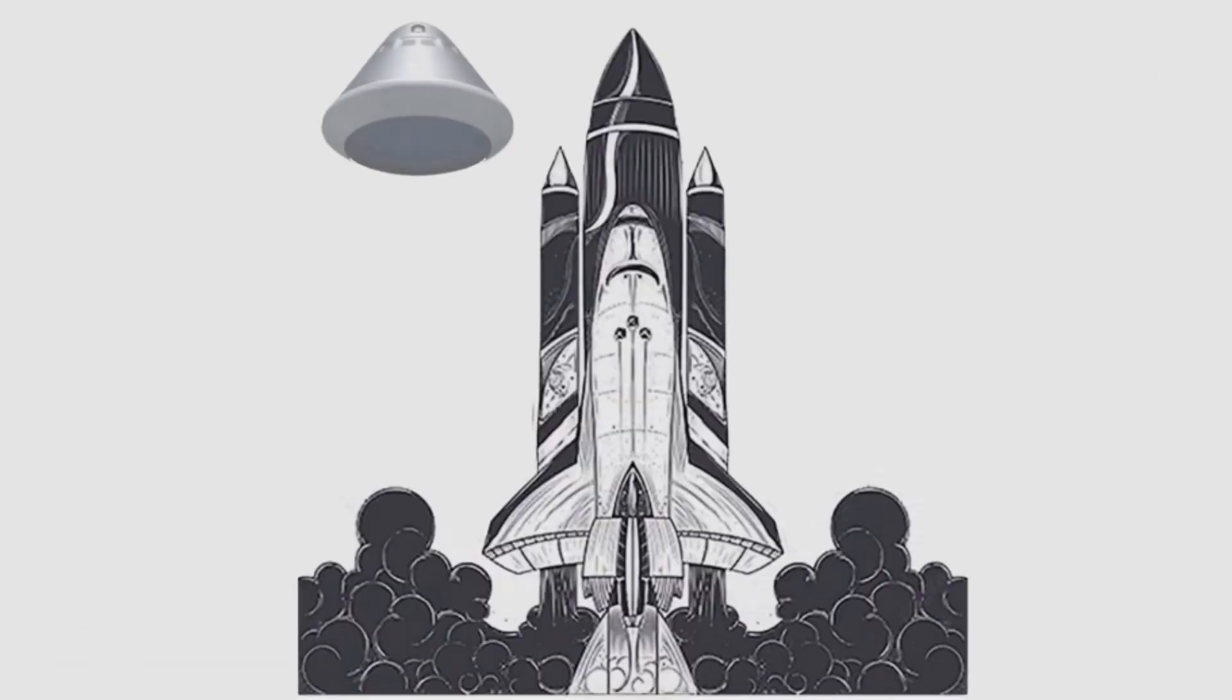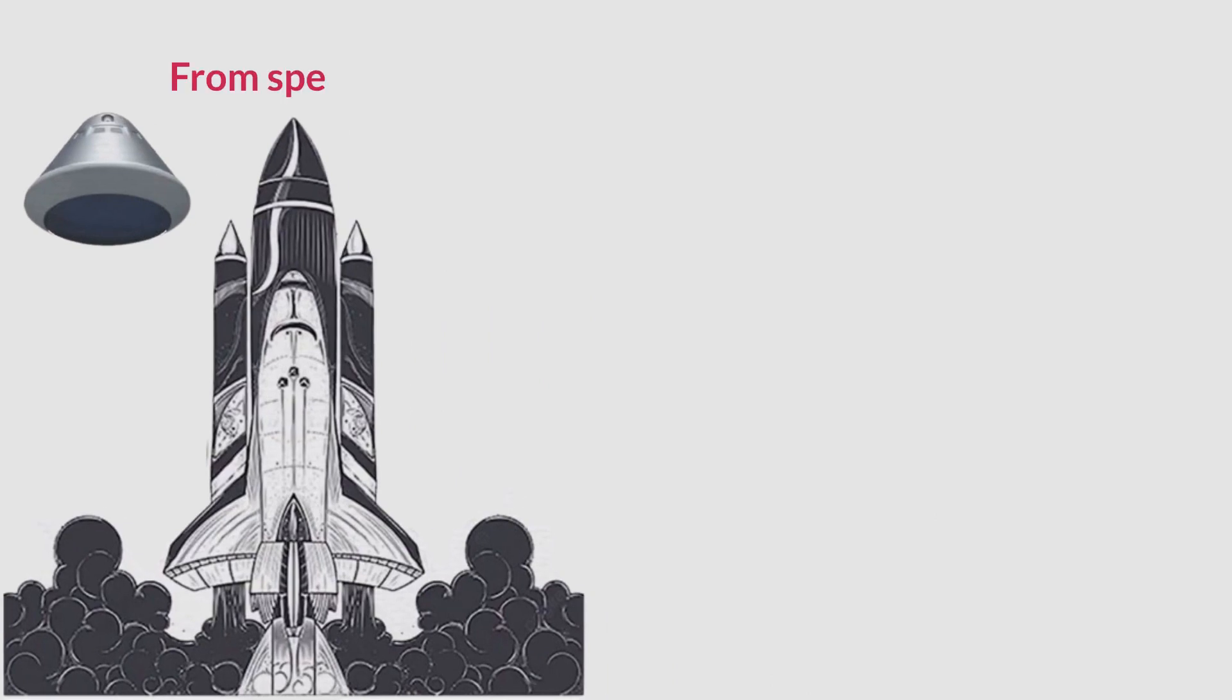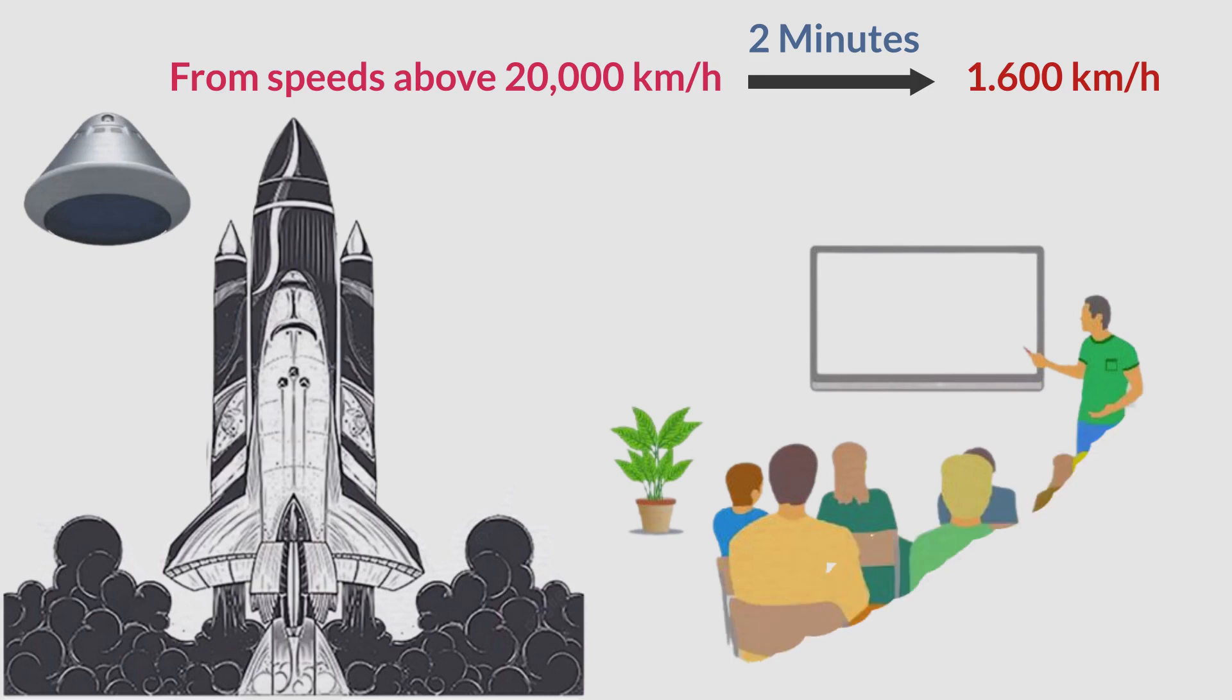First of all, to successfully land, the heat shield must work well. It must ensure to absorb most of the kinetic energy generated by the ship's friction with the atmosphere, slowing the ship from speeds above 20,000 kilometers per hour until at only 1,600 kilometers per hour, this process takes 2 minutes. In addition, it must protect the entire equipment in the ship from the heat generated by friction easily exceeding 1000 degrees Celsius.